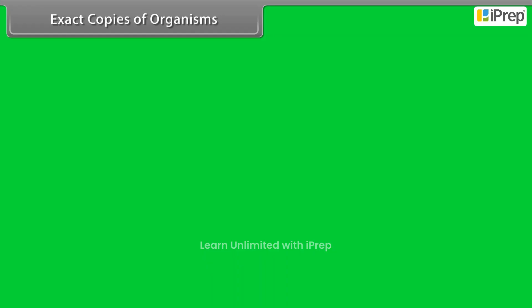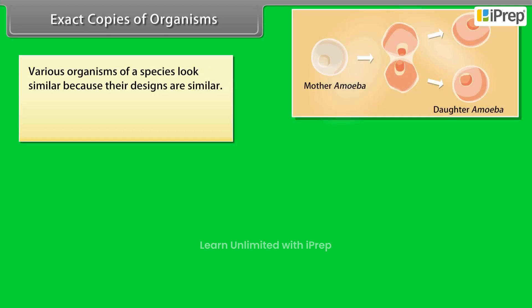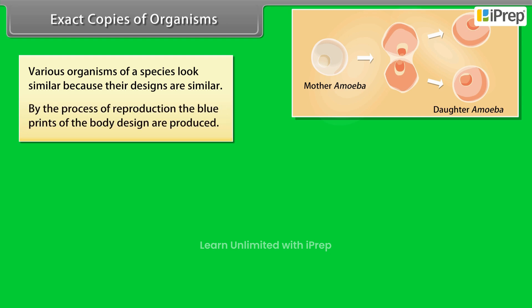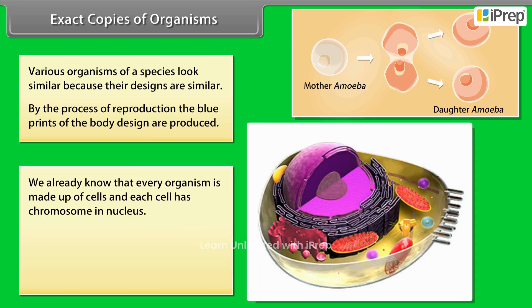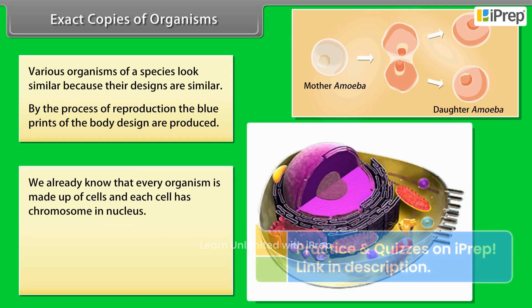Exact copies of organisms — various organisms of a species look similar because their designs are similar. By the process of reproduction, the blueprints of the body design are produced. We already know that every organism is made up of cells.